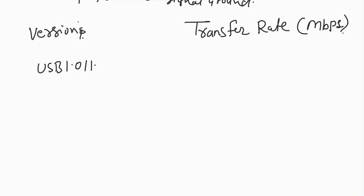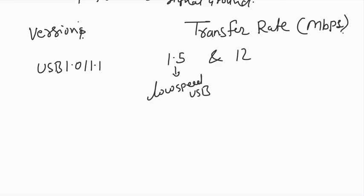USB 1.1 provided two types of data rates: 1.5 Mbps and 12 Mbps. The 1.5 Mbps is called low speed USB, and the 12 Mbps version is called high speed USB.